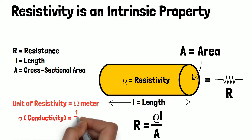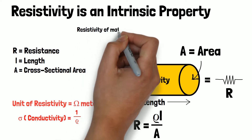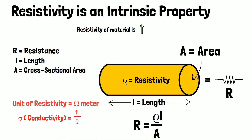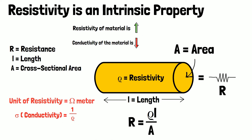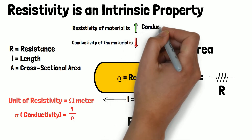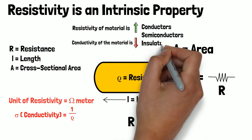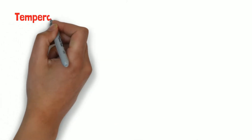Conductivity is the reciprocal of resistivity. When the resistivity of a material is high, its conductivity is very low, and vice versa. The resistivity of metals or conductors is very low. Arranging the materials in ascending order of resistivity, the order is conductors, semiconductors, and insulators.